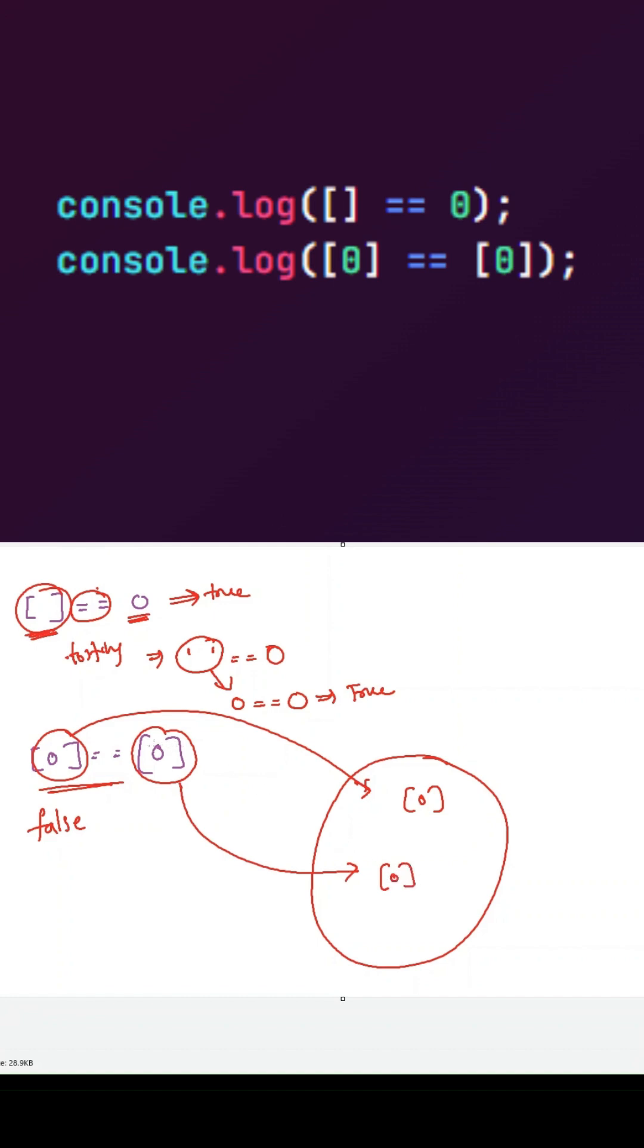So whenever we use loose equal to operator, it will check both the references are same or not. But here they are pointing out to two different locations in the memory, so the references will be different. So that's the reason it will log false.